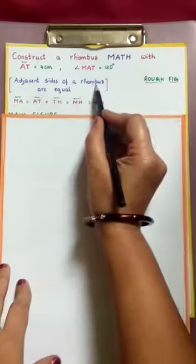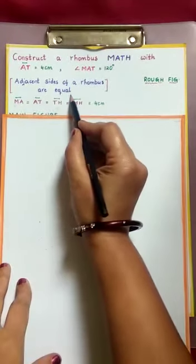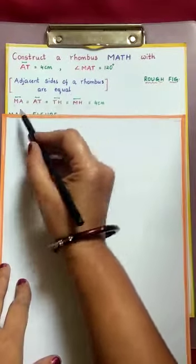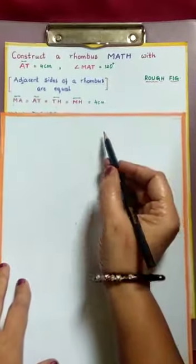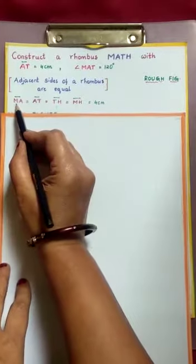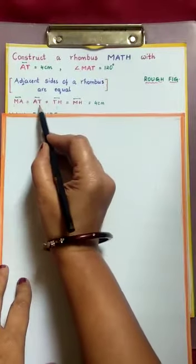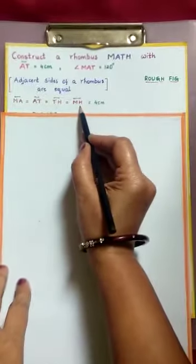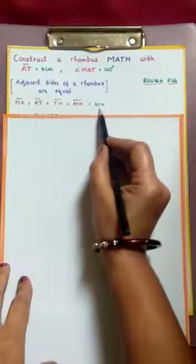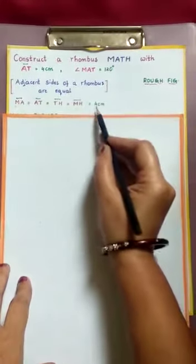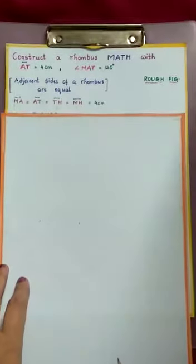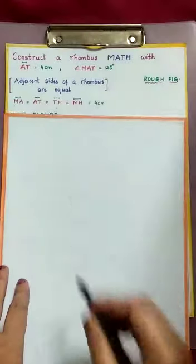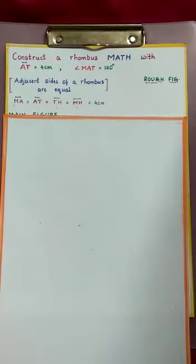Let us recall the properties of rhombus. Since adjacent sides of a rhombus are equal, it means all sides are equal. The lengths of MA, AT, TH, MH — all the sides are equal to 4 cm. So let us construct now.